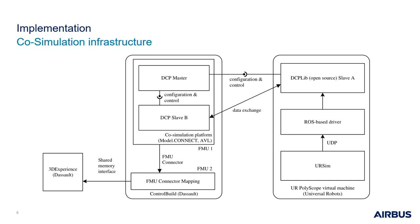This image shows the underlying co-simulation infrastructure. DCP slave B communicates with DCP slave A. Slave A is implemented using DCP-Lib, which interfaces URSim via a ROS-based driver. DCP slave A, the ROS-based driver, and URSim are part of the UR PolyScope virtual machine. DCP slave B and the DCP master are implemented in ModelConnect, a co-simulation platform, which is accessible as an FMU denoted as FMU1. A simple connector mapping using another FMU, denoted as FMU2, is used to connect with 3DEXPERIENCE.